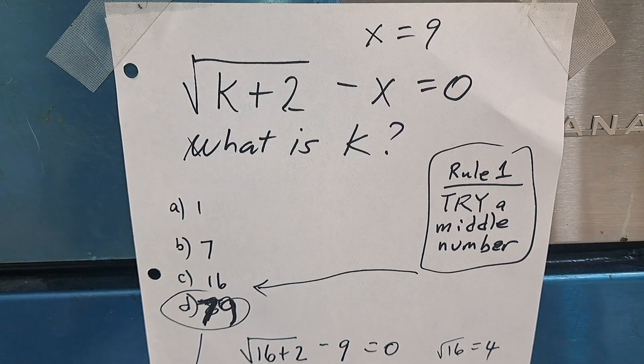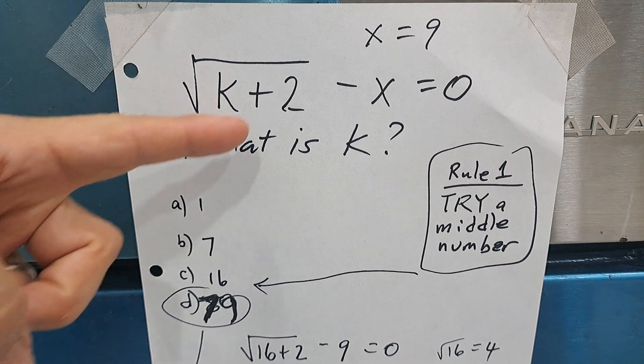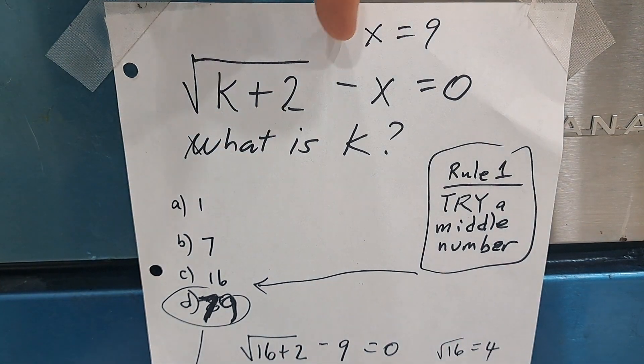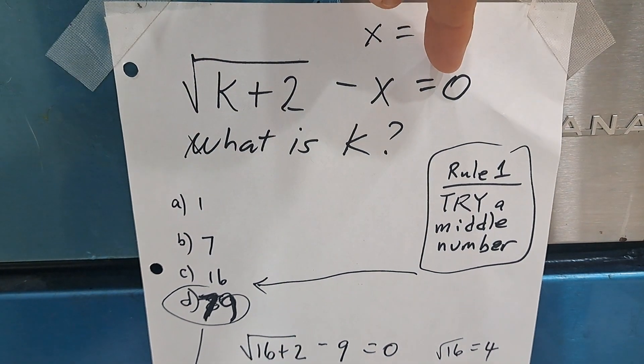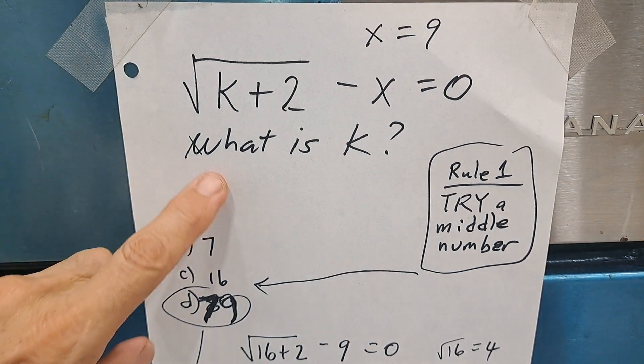This is an interesting question. They give you this k plus 2, and then you subtract x, and it equals 0. They say if x equals 9, what is k?